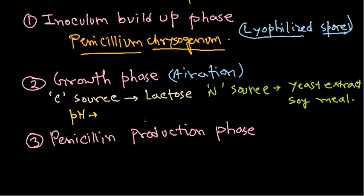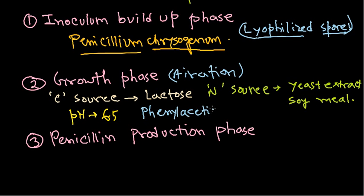During the growth phase as well as the penicillin production phase, we need to maintain the pH at around 6.5 — not very acidic but close — and this pH is very important throughout the productive cycle. We also need to provide the precursor molecule, phenyl acetic acid, because without it the penicillin precursor alpha-aminoadipic acid cannot facilitate production.